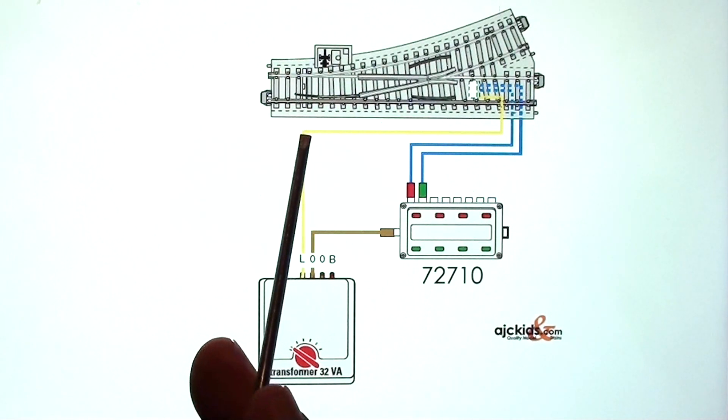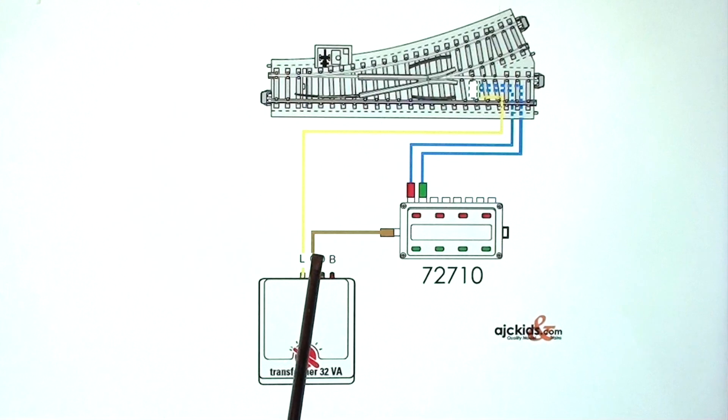The yellow is connected to the turnout motor, and the brown is connected to the side of our control box 72710.